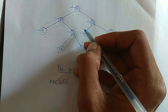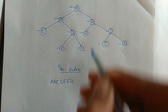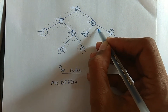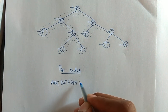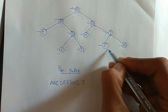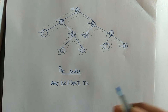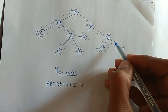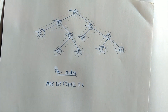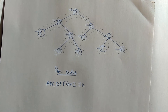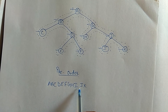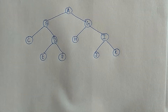Again it intersects node G, and after node G it intersects node H, and after that it intersects node I and node J, then node K. After traversing the whole tree, the pre-order that comes out is A, B, C, D, E, F, G, H, I, J, K.